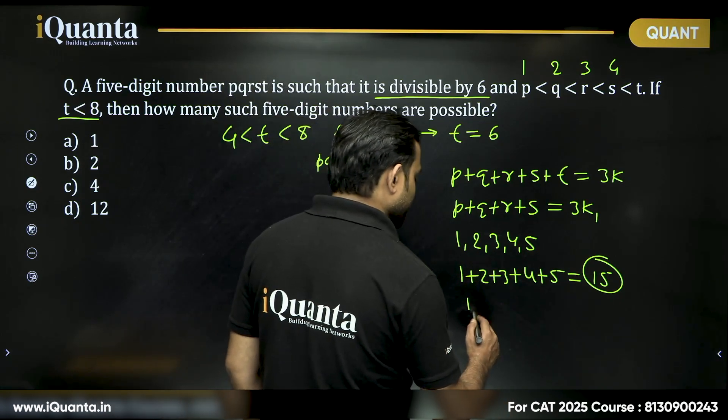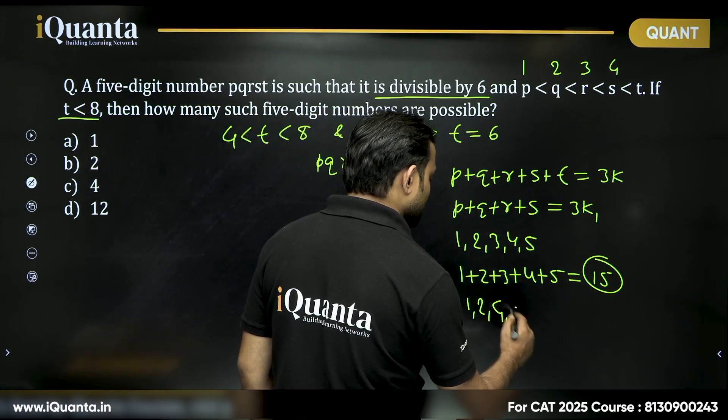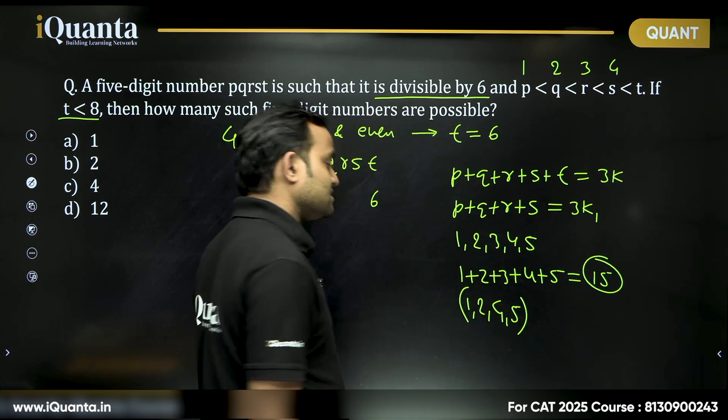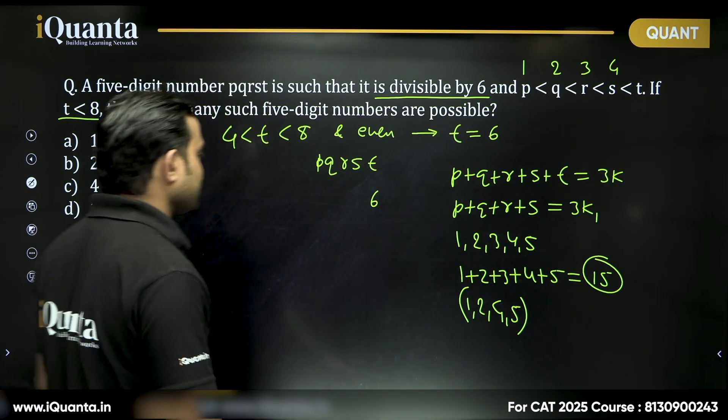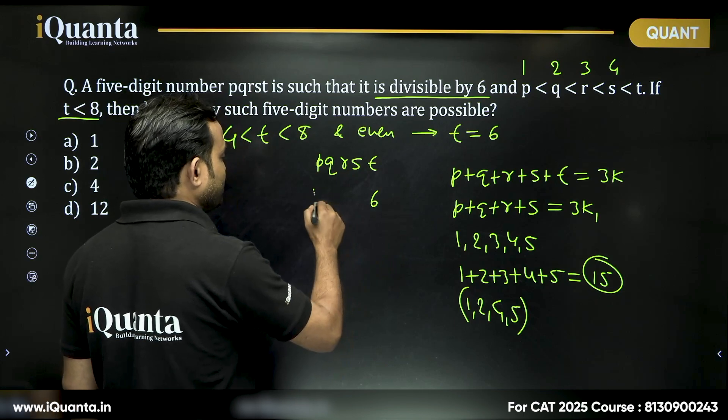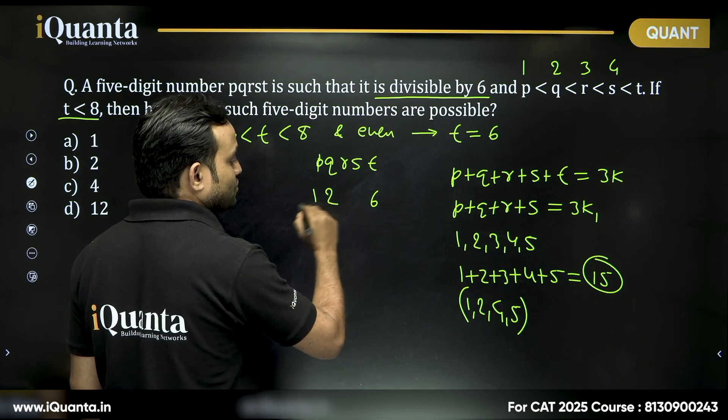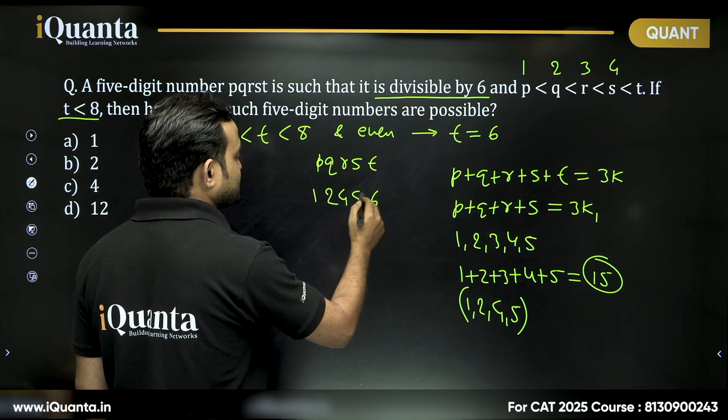That means we need to take the values of P, Q, R, S from 1, 2, 4, 5. So, what we can say, they are in increasing order. P must be 1, Q must be 2, R must be 4 and S must be 5.